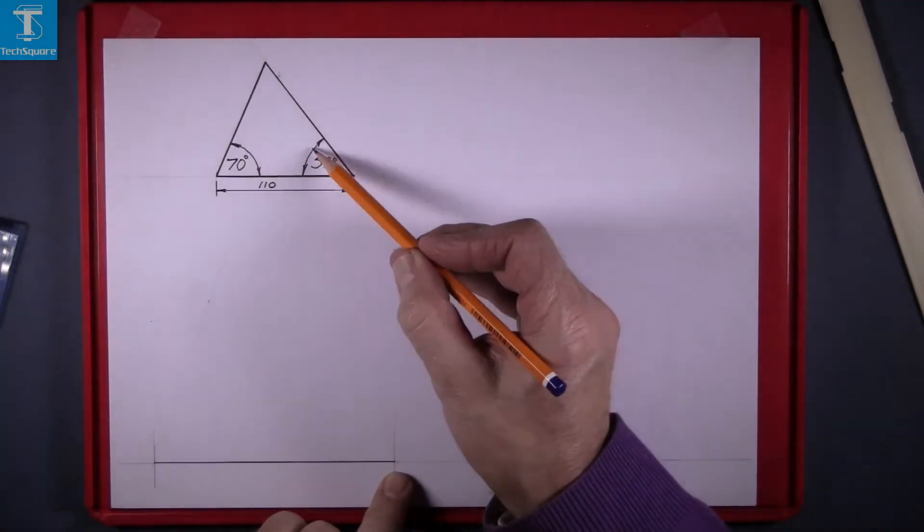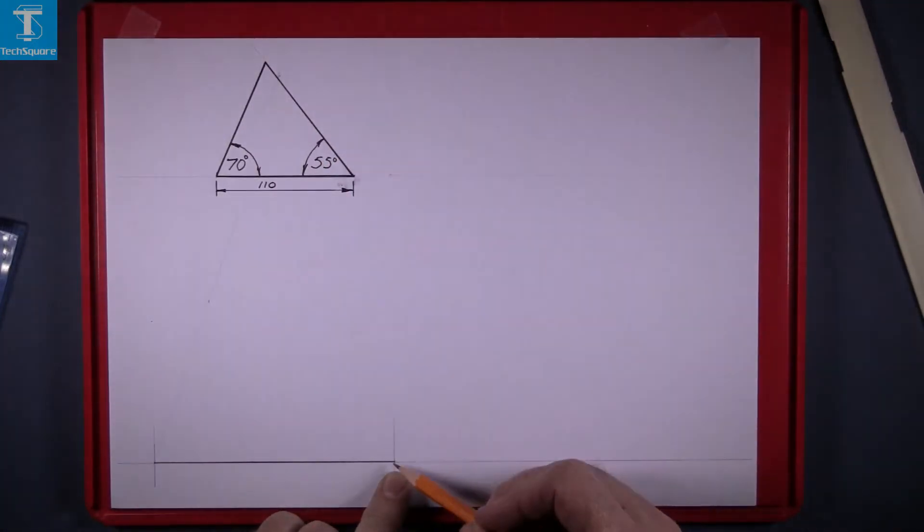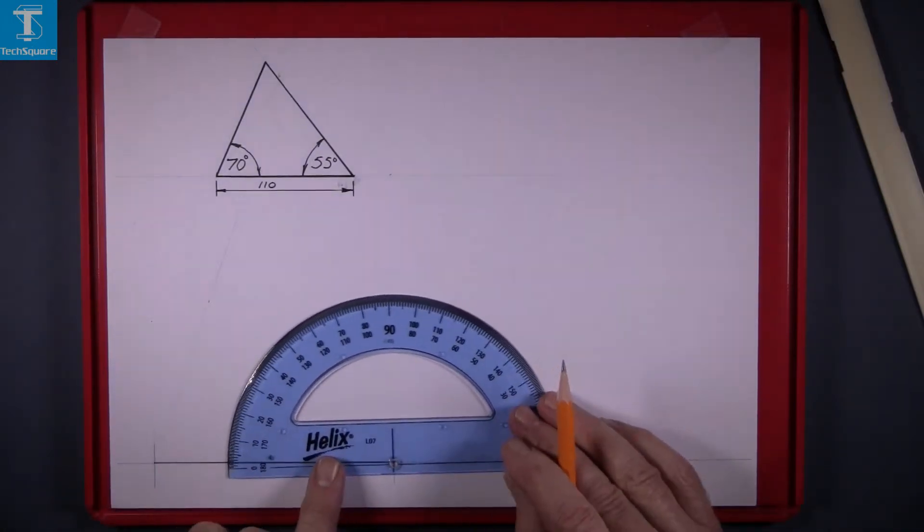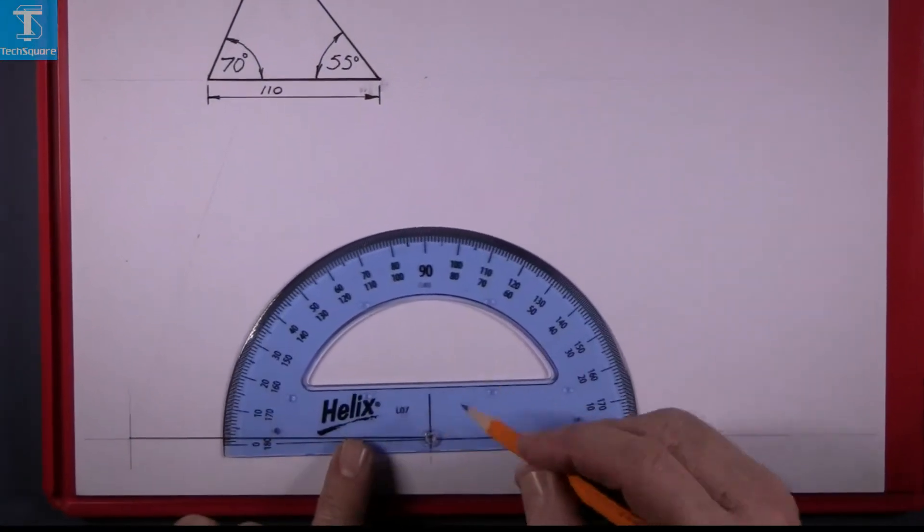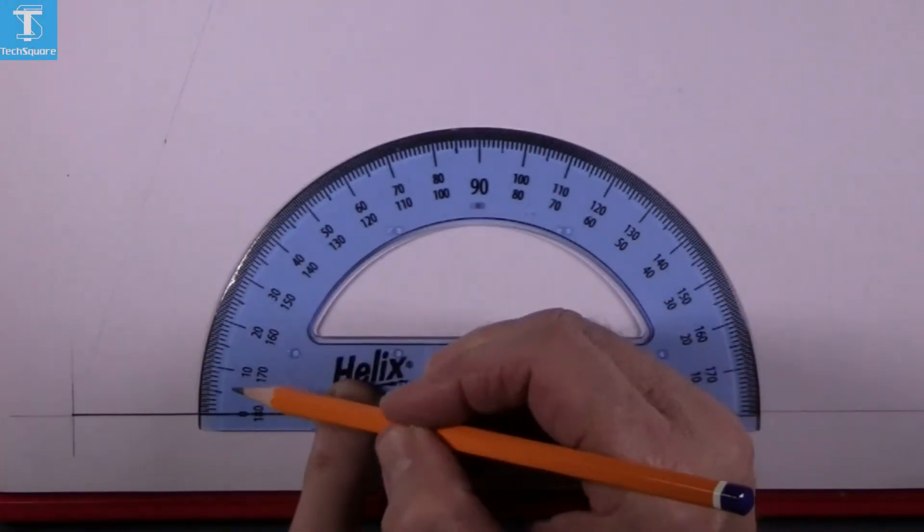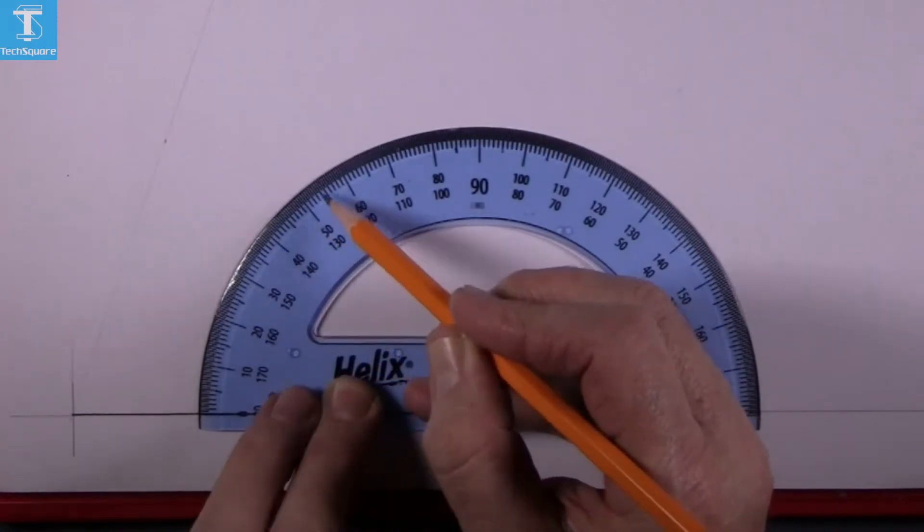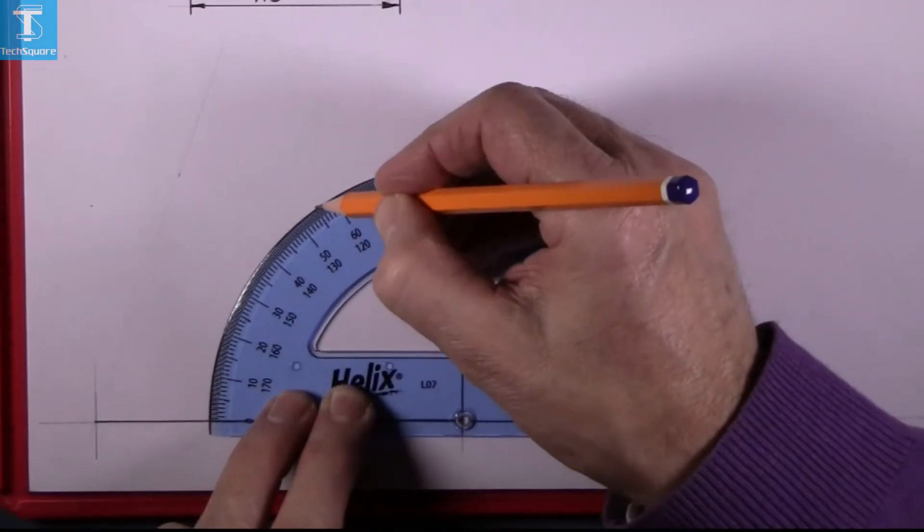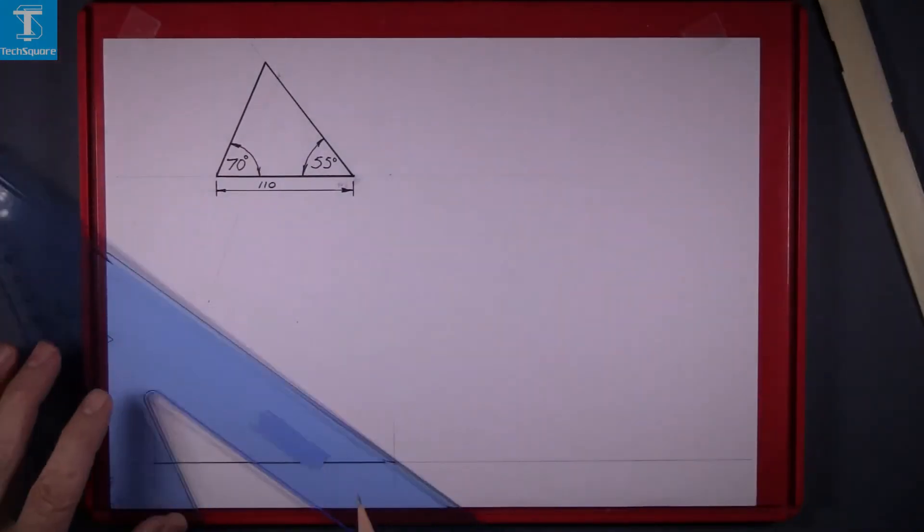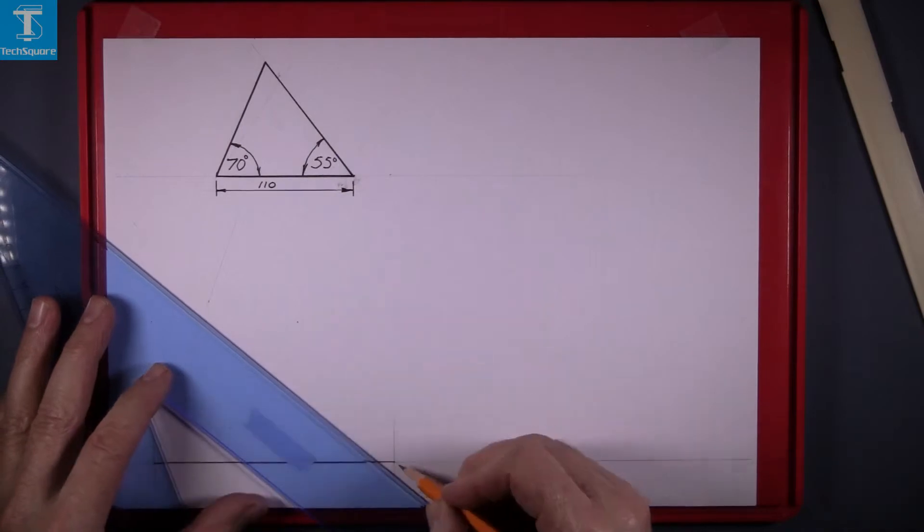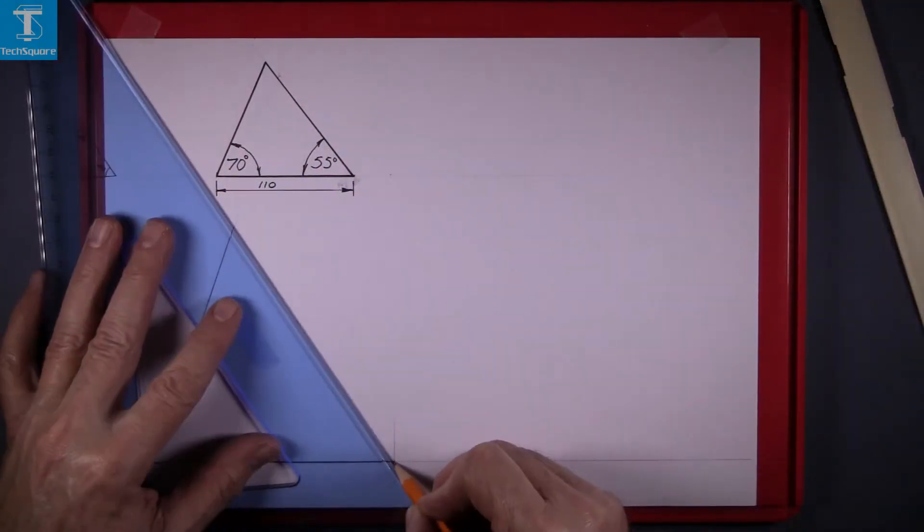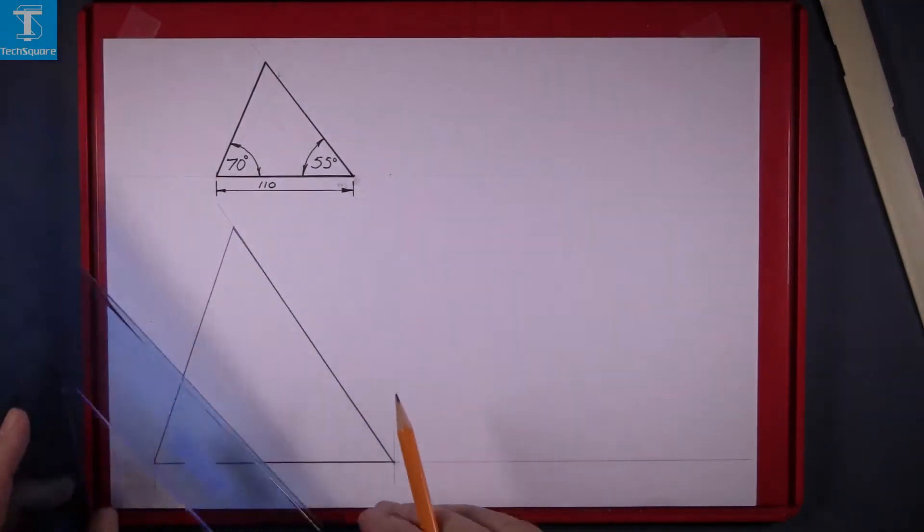Now the next angle is 55 degrees, so we put the protractor back on. Get the center of the protractor at the end of the line and line it up with the baseline and count up your angle: 10, 20, 30, 40, 50, 55 degrees. Mark that point there at 55 degrees and then draw a line through that point from the base and complete the triangle. And that's your first triangle drawn.